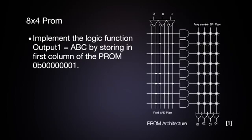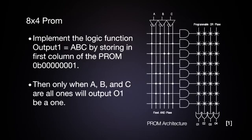Using this, we could implement the logic function output1 equals A, B, C by storing in the first column of the PROM the 8-bit word 00000001. Then only when A, B, and C are all 1s will the output, output1, be a 1.